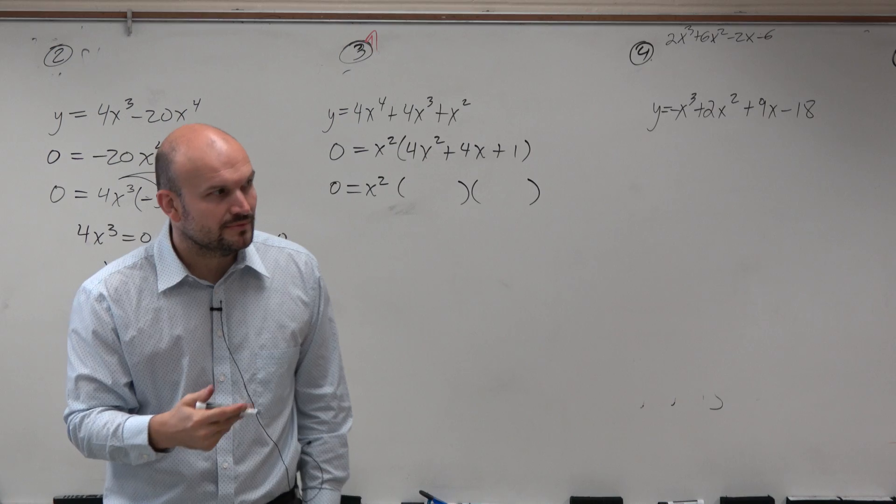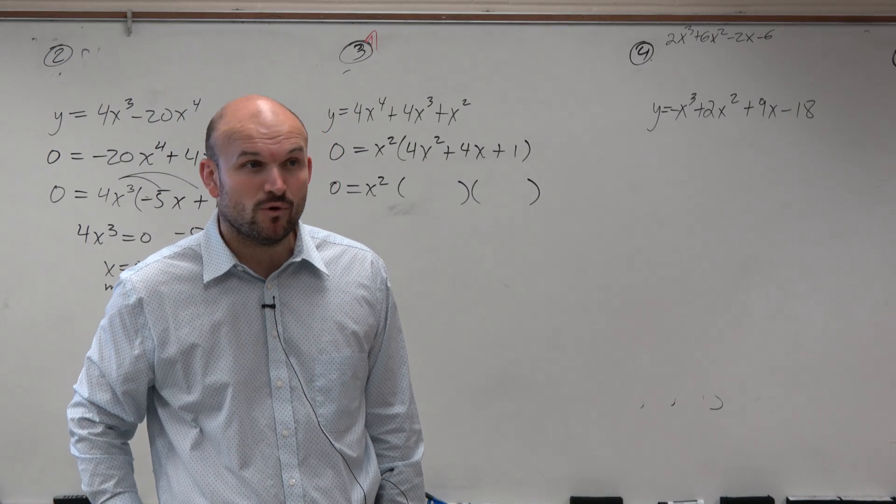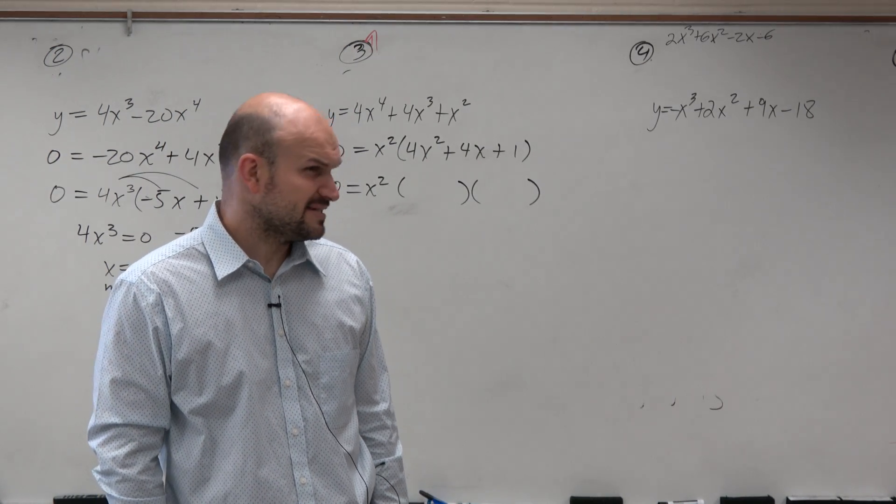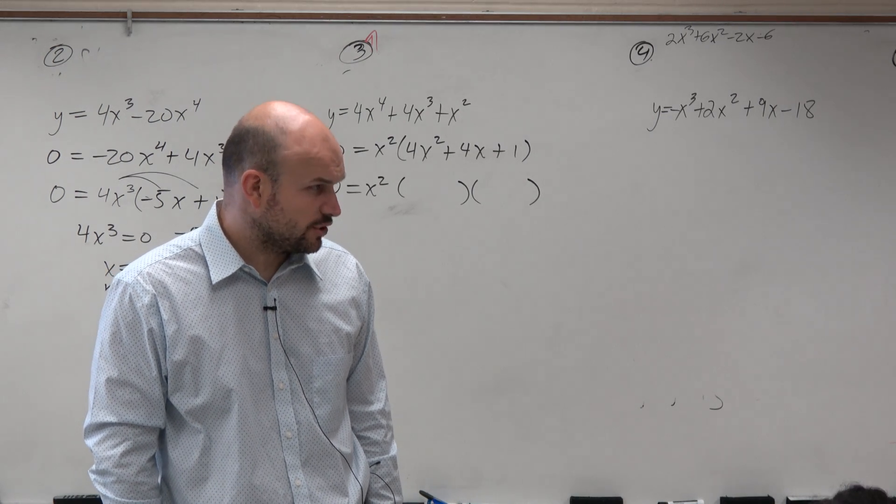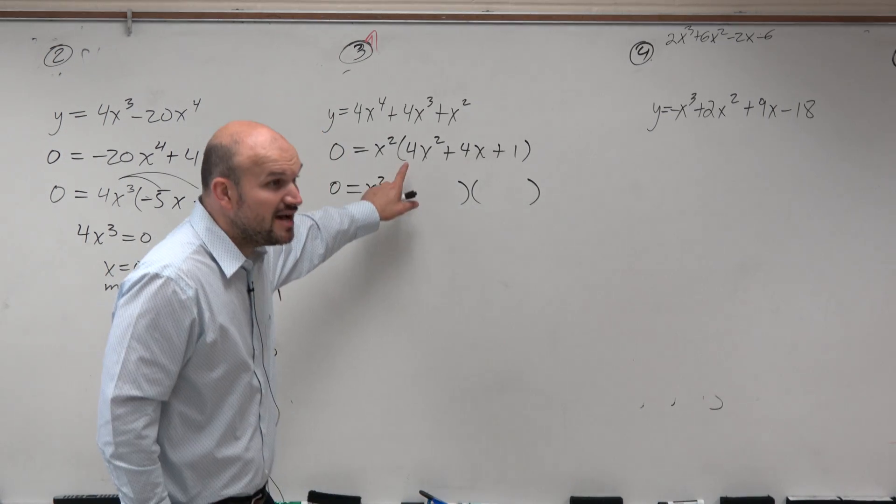Now, the problem, or at least the issue with this one, is a is not 1. Right? Remember when I gave you guys 73 examples, they all had 1 as a coefficient for x squared? I don't have that.